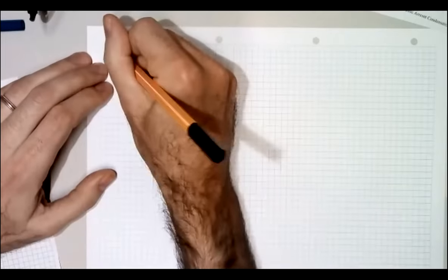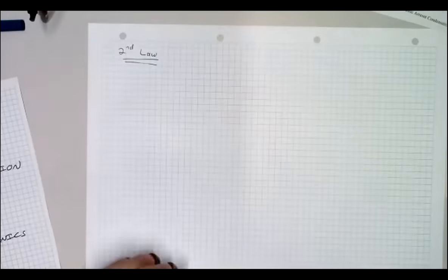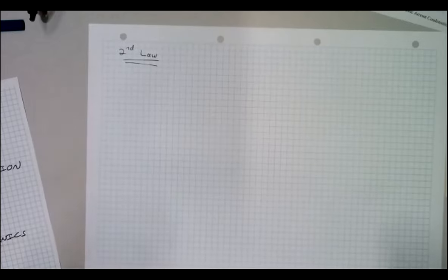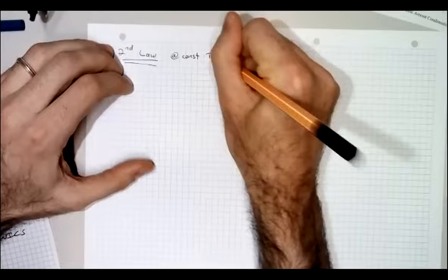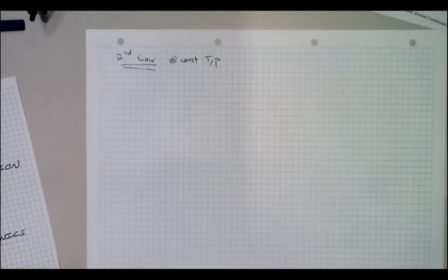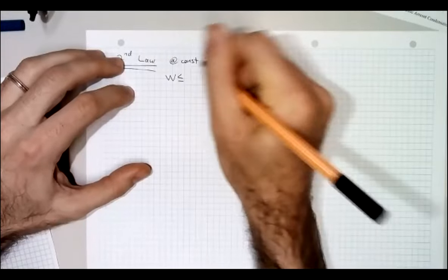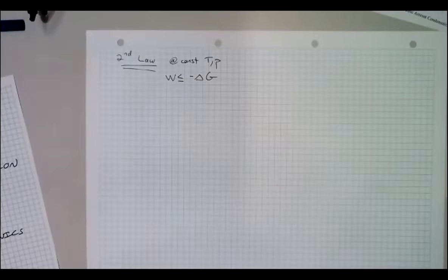So we're going to start with some essential thermodynamics. Whenever you're doing thermodynamics, it's good to start at the beginning. We're going to start at the second law of thermodynamics. Usually when we learn the second law in a physics course, we think about isolated systems and maximizing the entropy. But when you're working with living systems, it's more useful to work with the form of the second law that applies to a small system in contact with a thermal reservoir and a mechanical reservoir, so that the system stays at constant temperature and constant pressure. In that case, the second law says that the work done by a system going through any process has to be less than the reduction in its free energy.